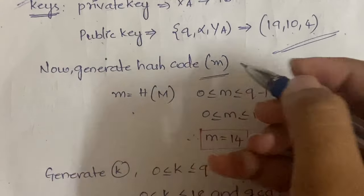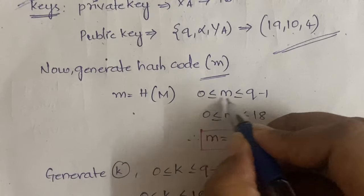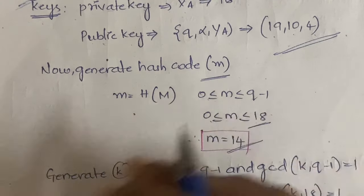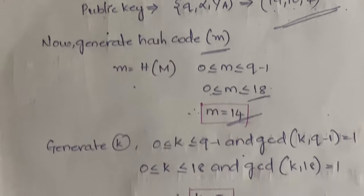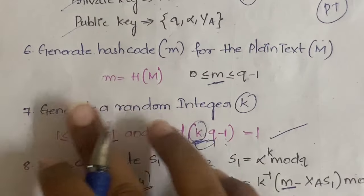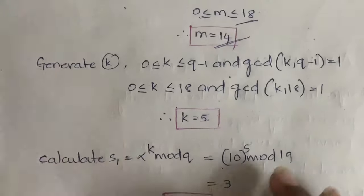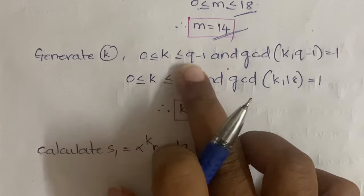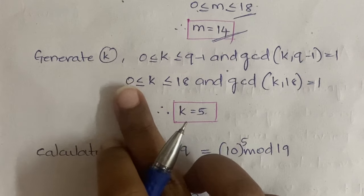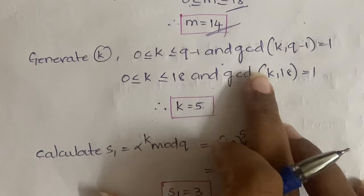Next, generate the hash code m. We directly assume m = 14, which lies between 0 and q−1 = 18. Then generate a random integer k such that 0 < k ≤ q−1 = 18 and gcd(k, q−1) = gcd(k, 18) = 1. We assume k = 5.